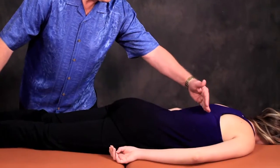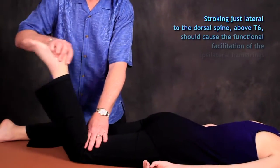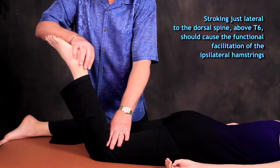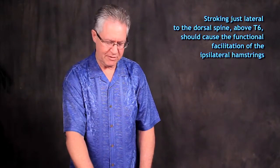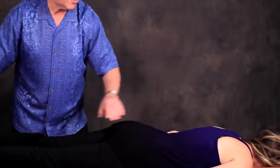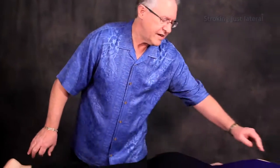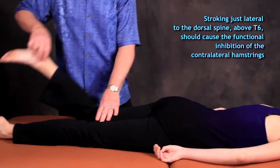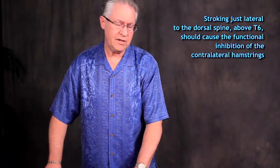We're dealing with above T6 now. If I stroke the dorsal spine above T6 and check the ipsilateral hamstring, a normal response is for that hamstring to be functionally facilitated. Stroking the left side should cause functional facilitation of the hamstring ipsilaterally. If I stroke the dorsal spine contralaterally, the normal response is functional inhibition.